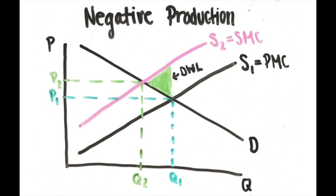In this case, the externality produces a larger quantity than needed. On the graph, you can see how the social marginal cost is greater than the private marginal cost. This is technically inefficient because at Q1, the social marginal cost is greater than the social marginal benefit, which is the demand curve.